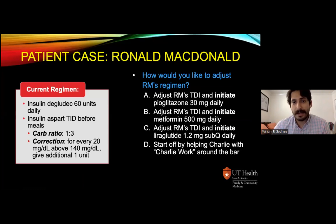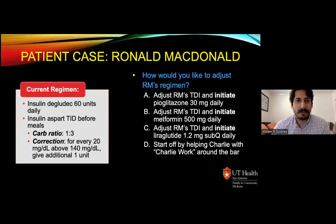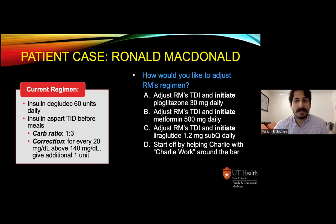Given all this information, what should we do to help RM get his diabetes back on track? Should we: A) adjust his total daily insulin and initiate pioglitazone 30 mg once daily; B) adjust his total daily insulin and initiate metformin 500 mg daily; C) adjust his insulin and initiate liraglutide 1.2 mg subcutaneous once daily; or D) nothing — he needs to start by doing some work around the bar. Please hold your answers as we'll revisit RM throughout the presentation.